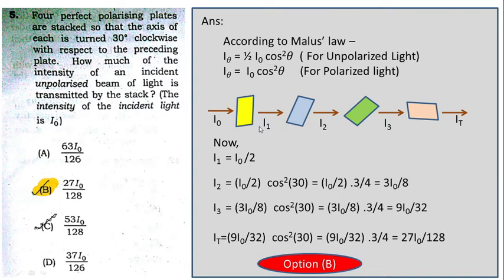Now I₁ is the incident intensity for the second polarizer, and the light is now polarized. Using the polarized light formula: I₂ = (I₀/2) cos²(30°) = (I₀/2)(3/4) = 3I₀/8.